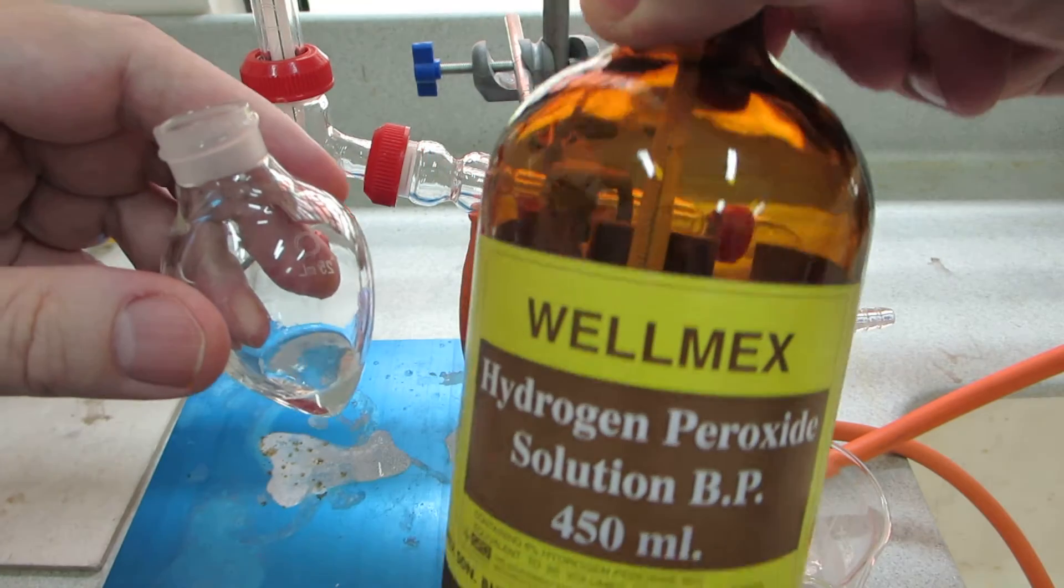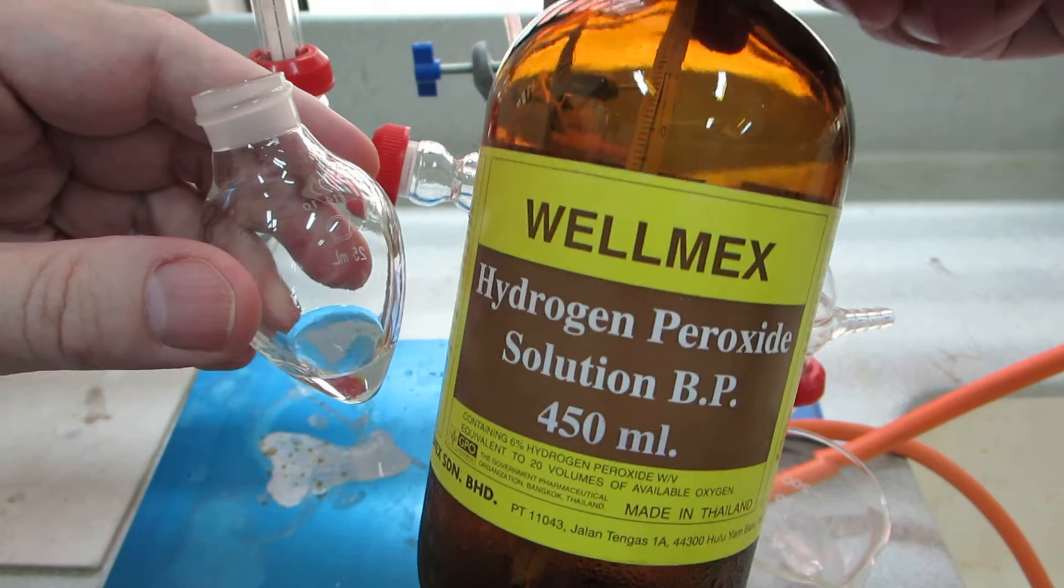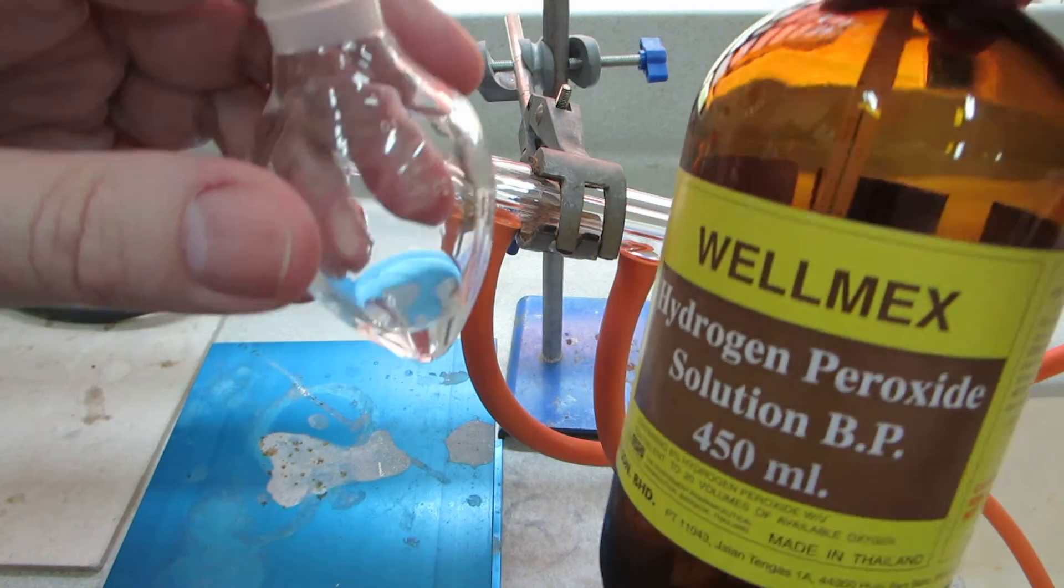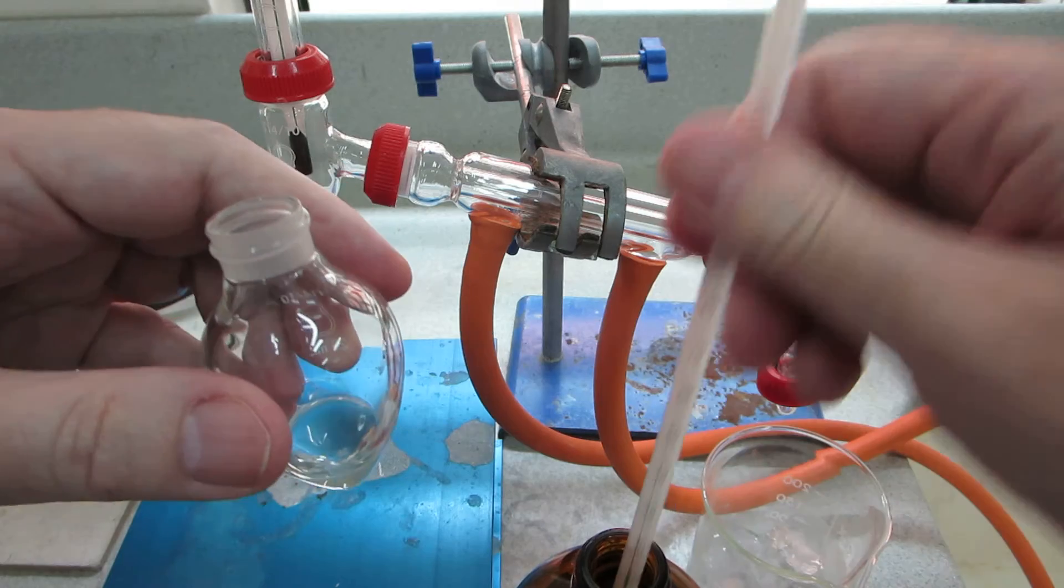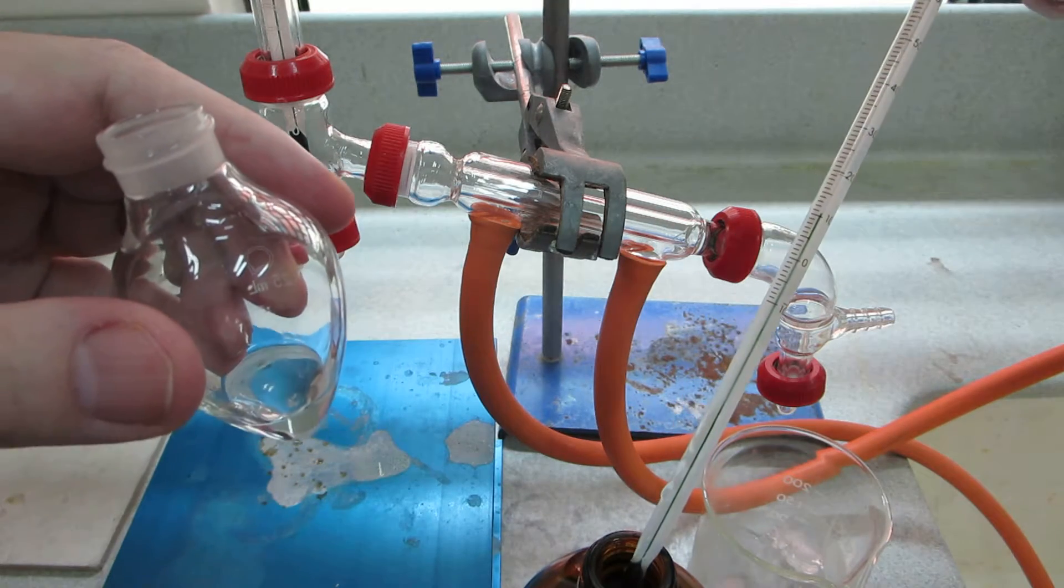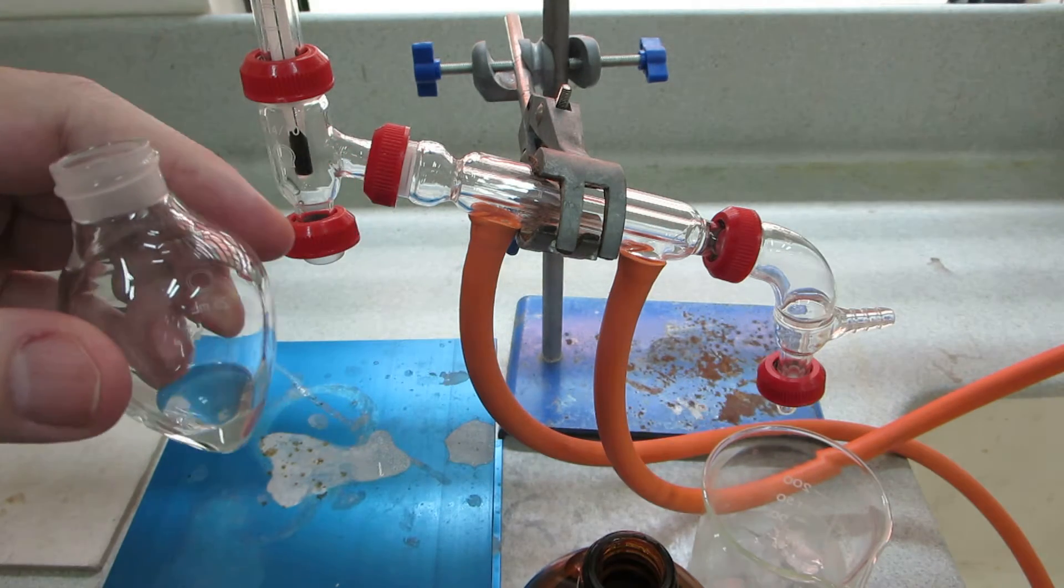Well here's the hydrogen peroxide, this is 20 volume hydrogen peroxide. At the moment there's a thermometer reading the temperature, it's at about 11.5 degrees centigrade.